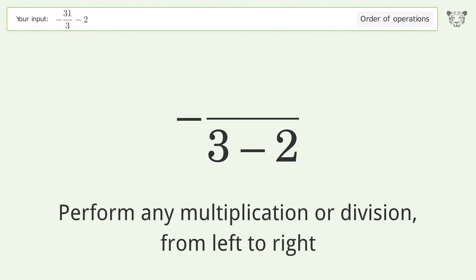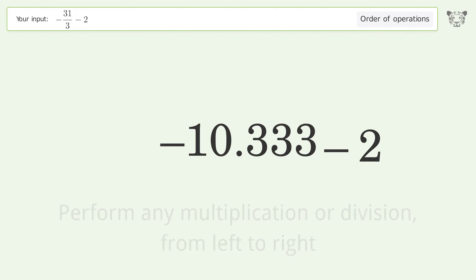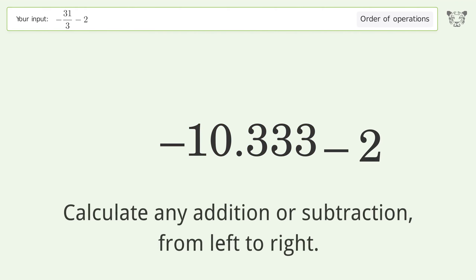Perform any multiplication or division from left to right: negative 31 over 3 equals negative 10.333.